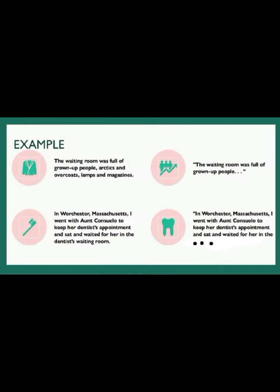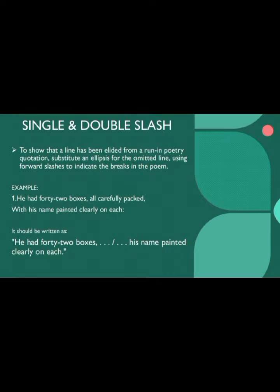In the first example, 'the waiting room was full of torn up people, arctics, evo codes, lamps and magazines' can be written by omitting few words followed by an ellipsis. In the second sentence, the whole sentence is written by omitting the last few lines and placing an ellipsis instead.